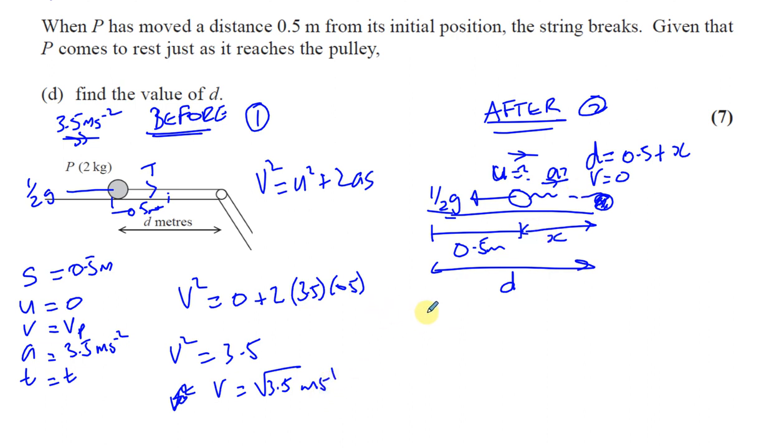So if we look at the second situation after the string broke, you've got S is X, what we have to find here, and add to our 0.5. U is now this speed, which we just found. V is 0 because it comes to rest at the pulley. A, now A is going to be different. It's not the same because you don't have the tension now. So F equals MA. The resultant force here is minus half G because it's moving in this direction. Minus half G is the only force acting. It's acting in the opposite direction. There's no more tension now. And that's equal to MA. And the mass of P was 2M, so it's 2A. So we can say that A is going to be minus a quarter G.